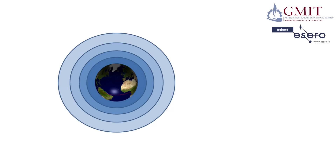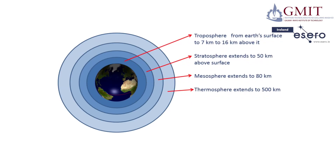When scientists study the atmosphere of the Earth, they divide it into layers, each layer having common features. So if we look at this diagram here, we can see that as you come out from the Earth, the outermost layer, which extends to about 500km from the Earth's surface, is known as the thermosphere.